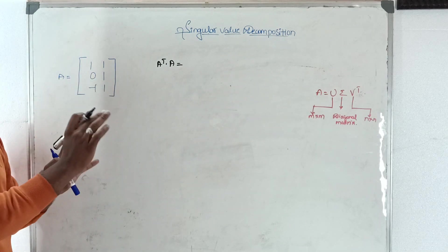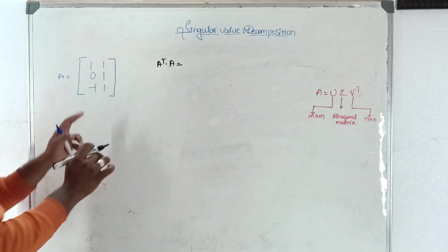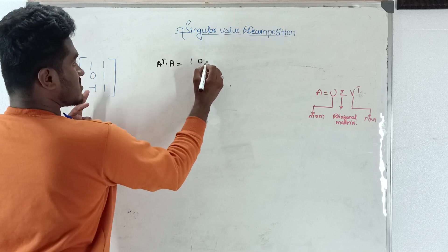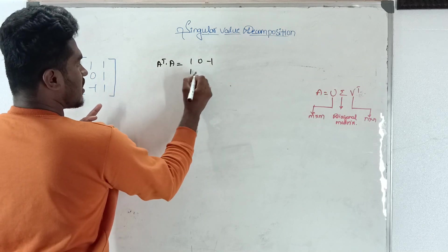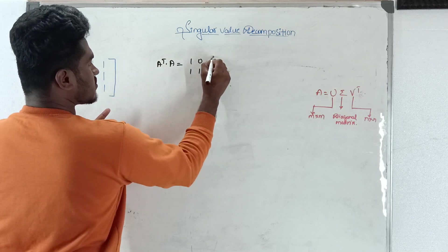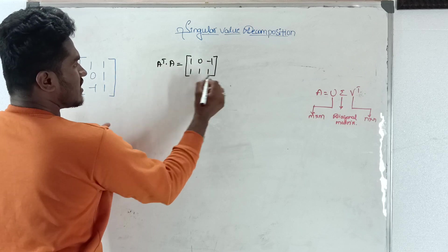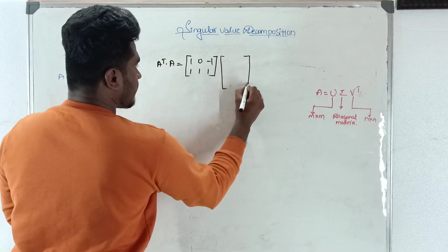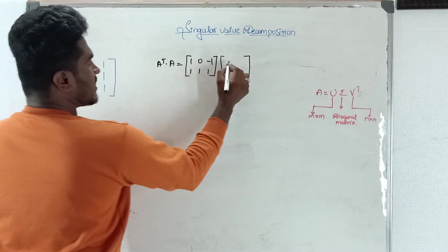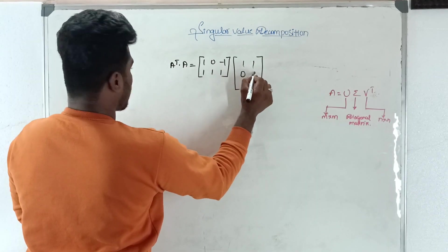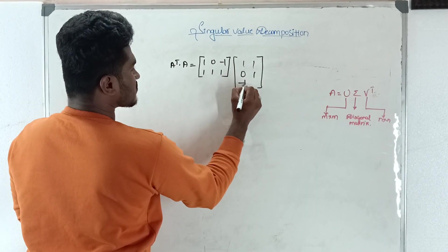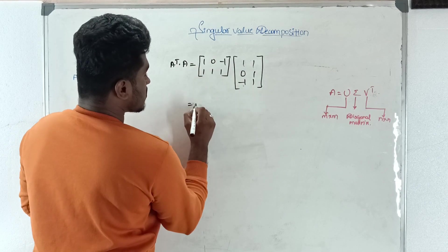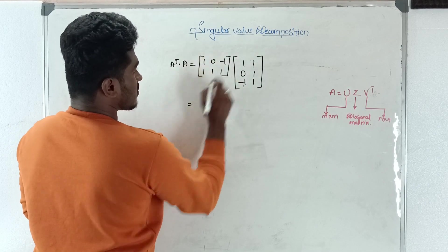To find A transpose we transform the rows into columns and columns into rows, giving us: 0, 1, 0, -1, 1, 1. Then we write matrix A as: 1, 1, 0, 1, -1, 1, 1. We now compute their multiplication.